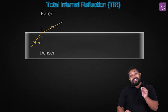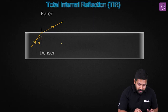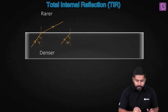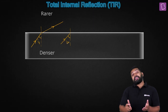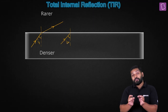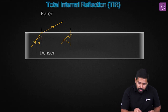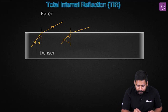Now we increase the angle of incidence a little bit more. Let's say this is the new angle of incidence — as you can see, the angle of incidence has increased. Let's call it I2. The refracted ray is going to bend even further.